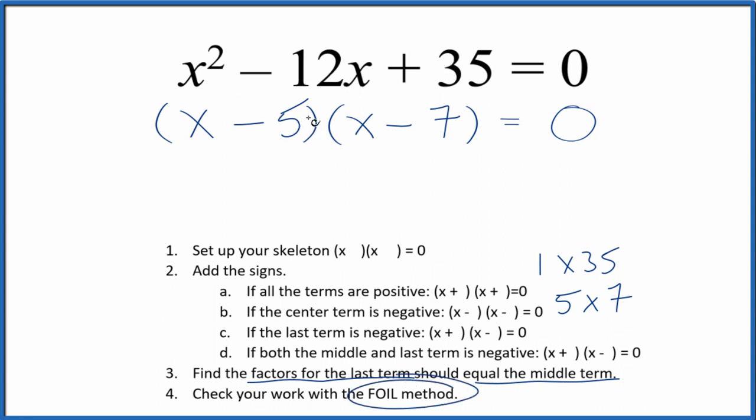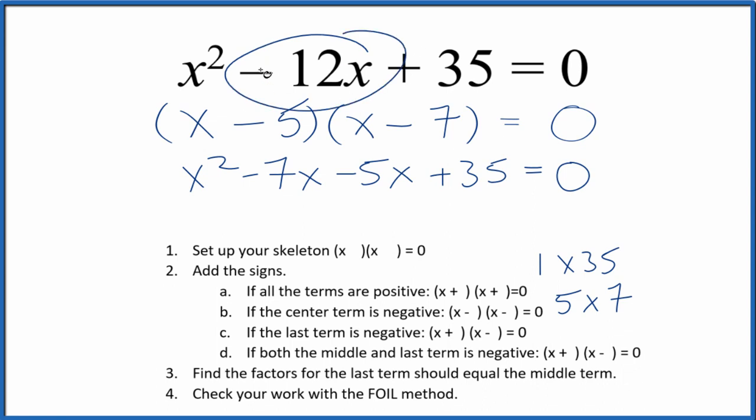Let's check our work with the FOIL method. We multiply the first, outside, inside, and then last terms. And if we combine negative 7x and negative 5x, that gives us negative 12x. We have 35 here, x squared here. It's the same thing as we started out with. So we did this correctly.